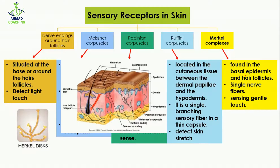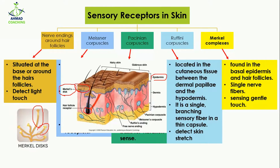The last receptor type in the skin is Merkel's complexes, found in the basal epidermis and hair follicles. Also known as Merkel's discs, they are present in the epidermis and may also be associated with hair follicles. They are single nerve fibers that are not encapsulated — they are free endings. Their function is to sense gentle touch.